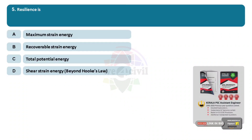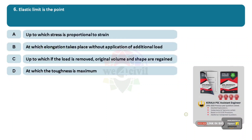Resilience is? Option A, maximum strain energy. Option B, recoverable strain energy. Option C, total potential energy. Option D, shear strain energy beyond Hooke's Law. Answer is Option B, recoverable strain energy.